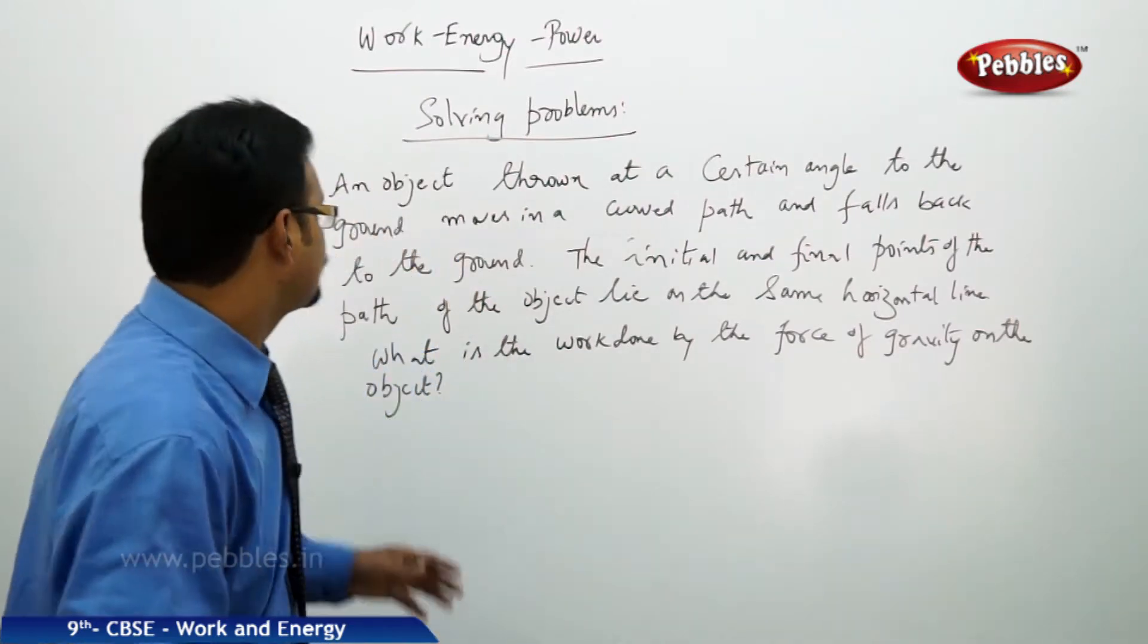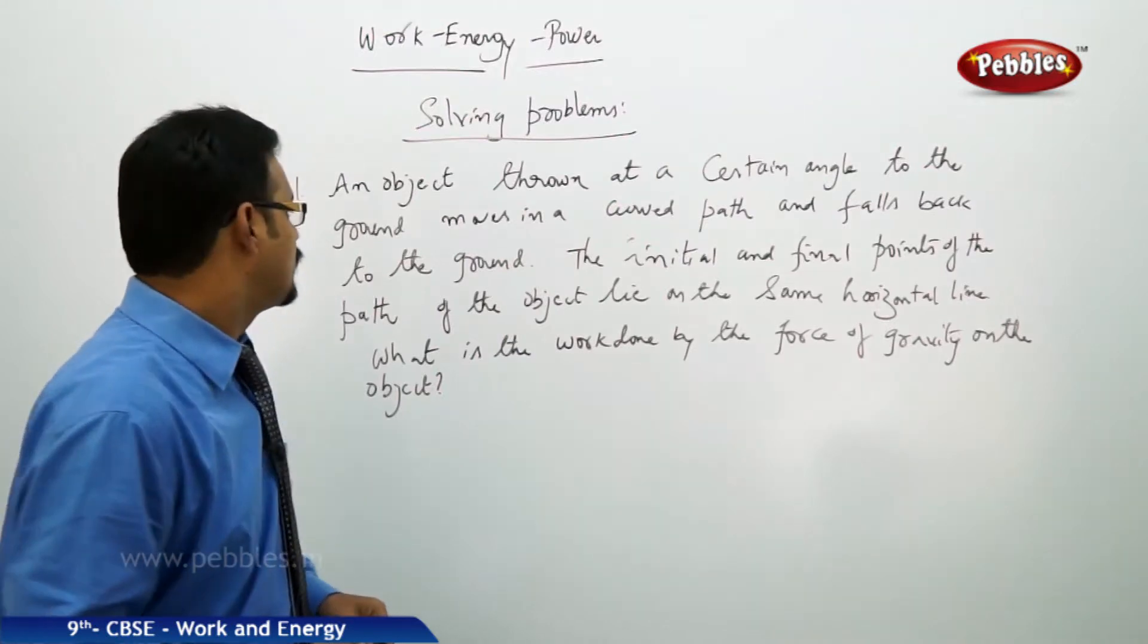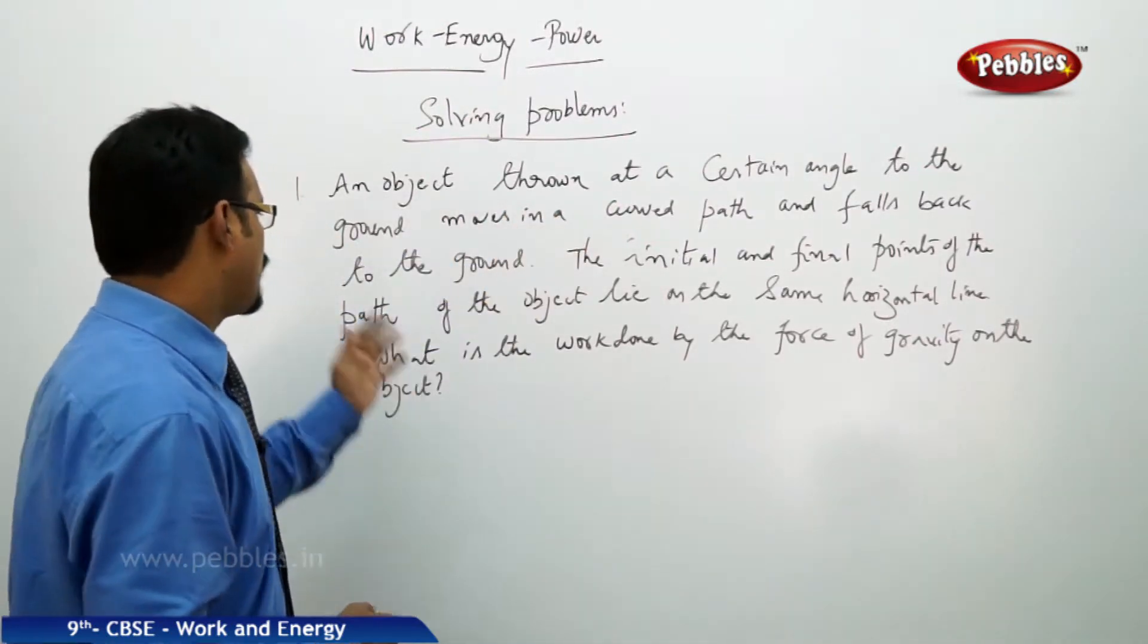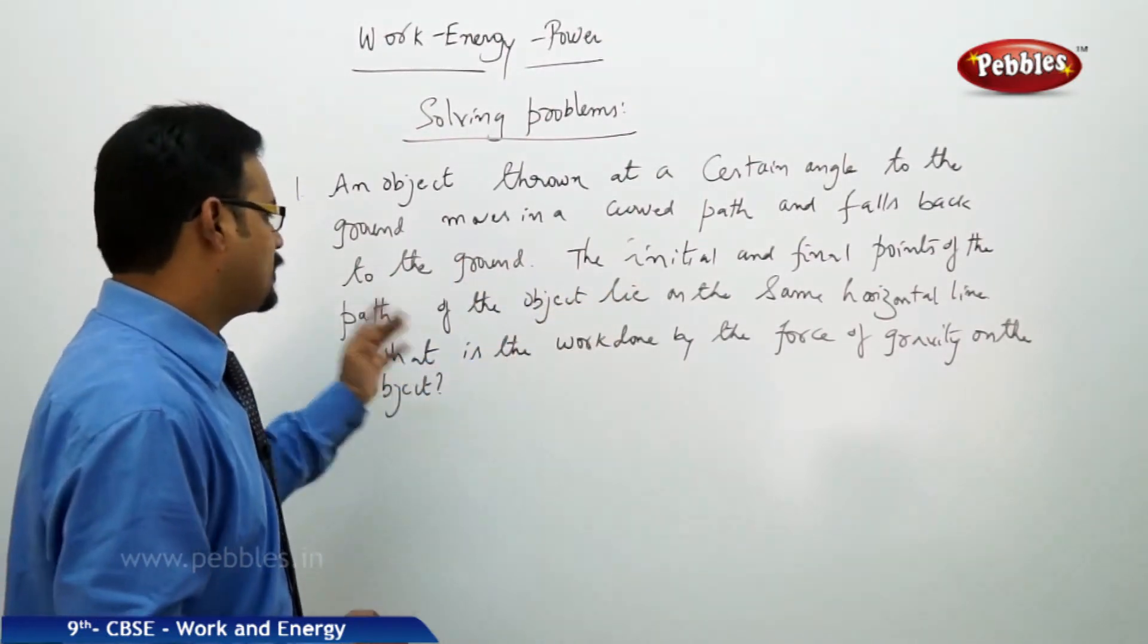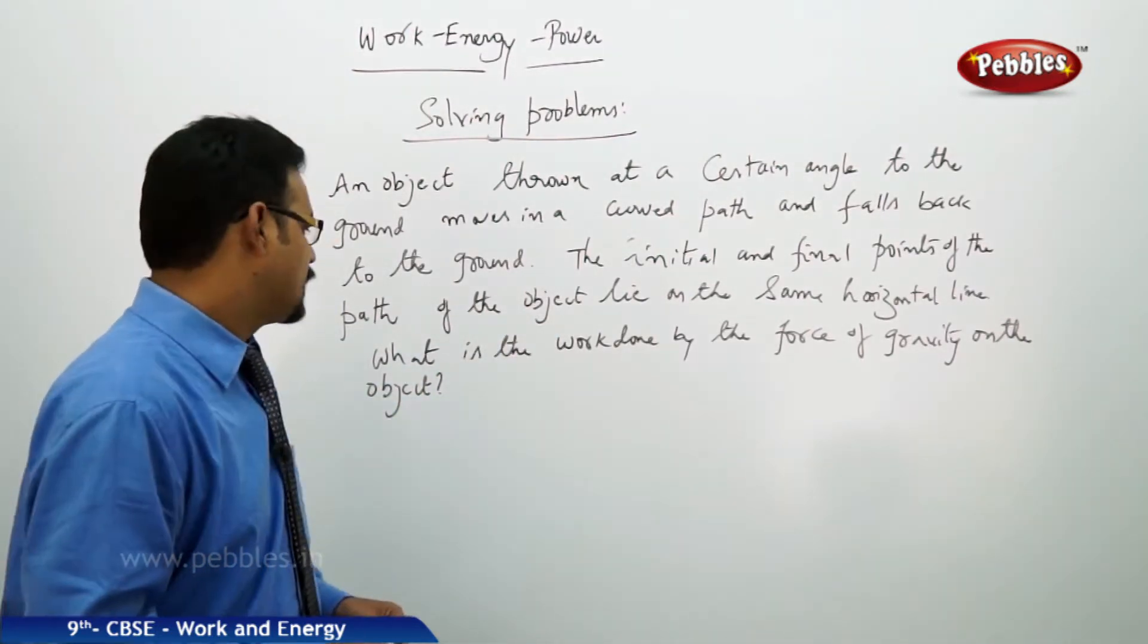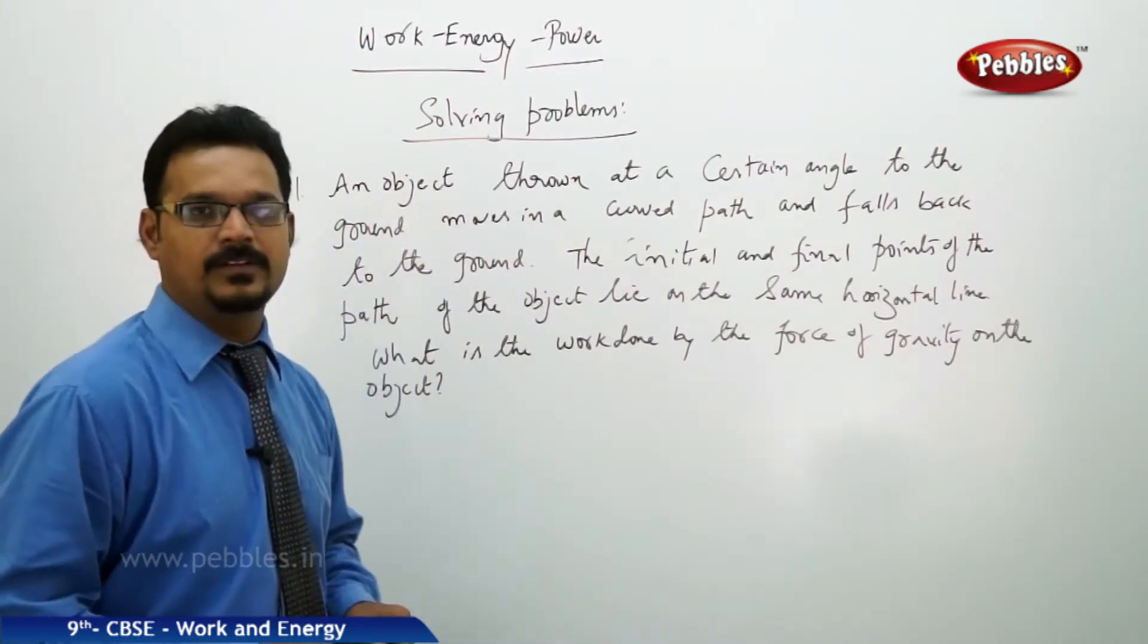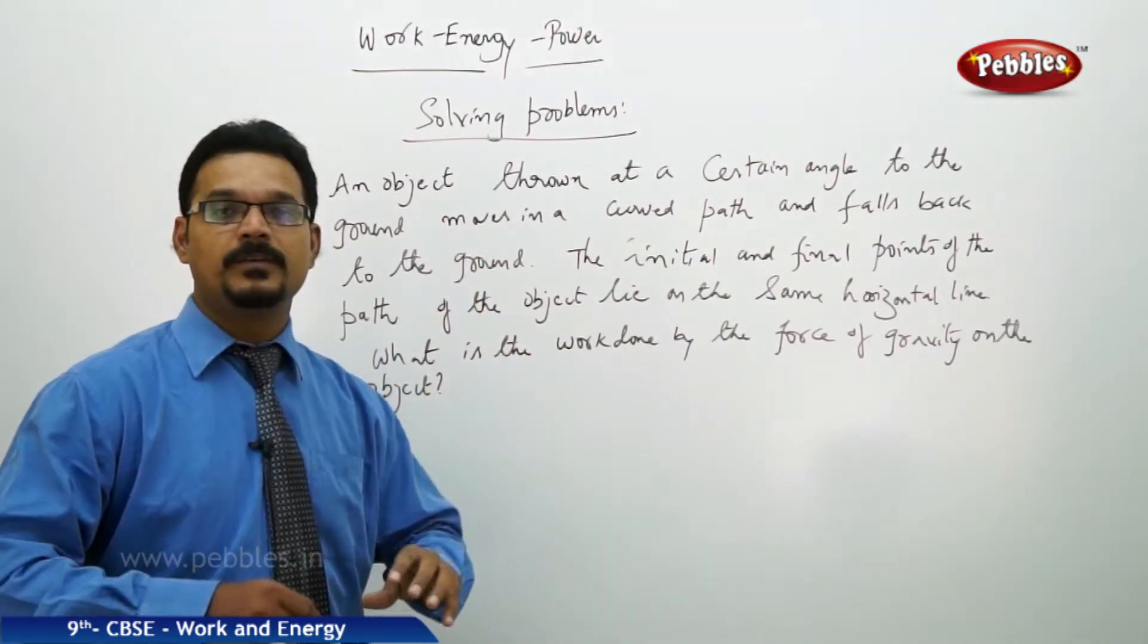An object thrown at a certain angle to the ground moves in a curved path and falls back to the ground. The initial and final points of the path of the object lie on the same horizontal line. What is the work done by the force of gravity on the object?